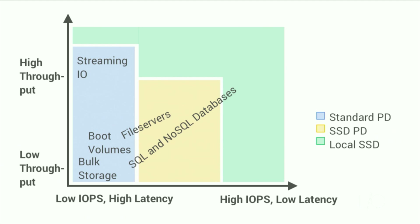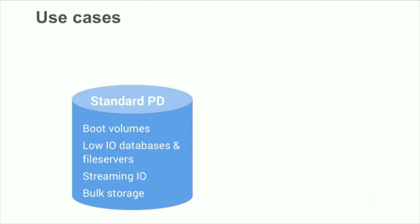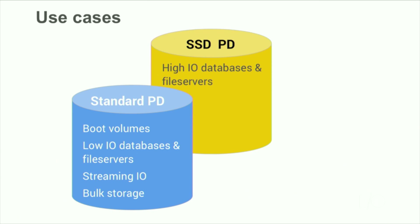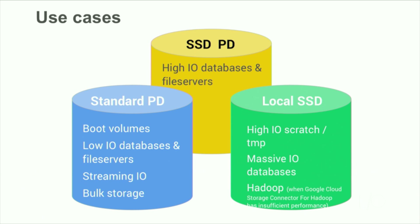SQL databases, like MySQL and Postgres, and NoSQL databases, like Cassandra, Mongo, and Redis, tend to be transactional and IOPS heavy. Smaller instances might be able to be run on standard PD, but important production databases should usually be run on some form of SSD — either SSD persistent disk or local SSD, depending on how high the IOPS needs are. File servers, like NFS, Gluster, or Ceph, can be more streaming or more transactional depending on what the clients are doing; SSD PD is generally a great choice here. High performance scratch disk, where keeping the data local is the right architecture, should go on local SSD. For Hadoop deployments where IO needs exceed what Google Cloud Storage Connector for Hadoop can provide, you should use local SSD under a Hadoop-optimized file system.